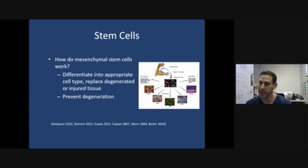They differentiate into different cell types, and the theory, which has been proven in animal models but has not been proven in human models, is that they can replace degenerative tissue. And the idea is they can prevent degradation.